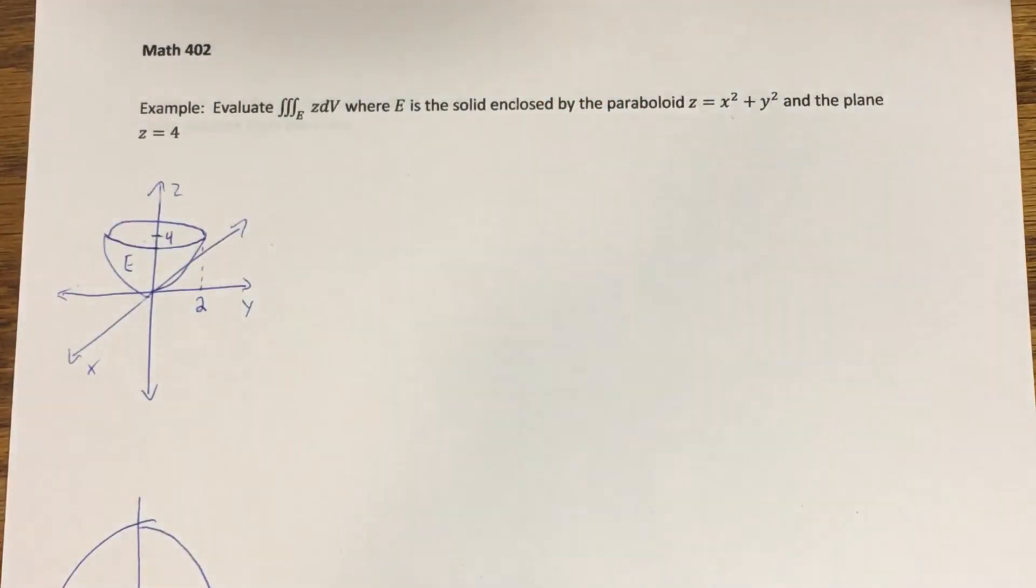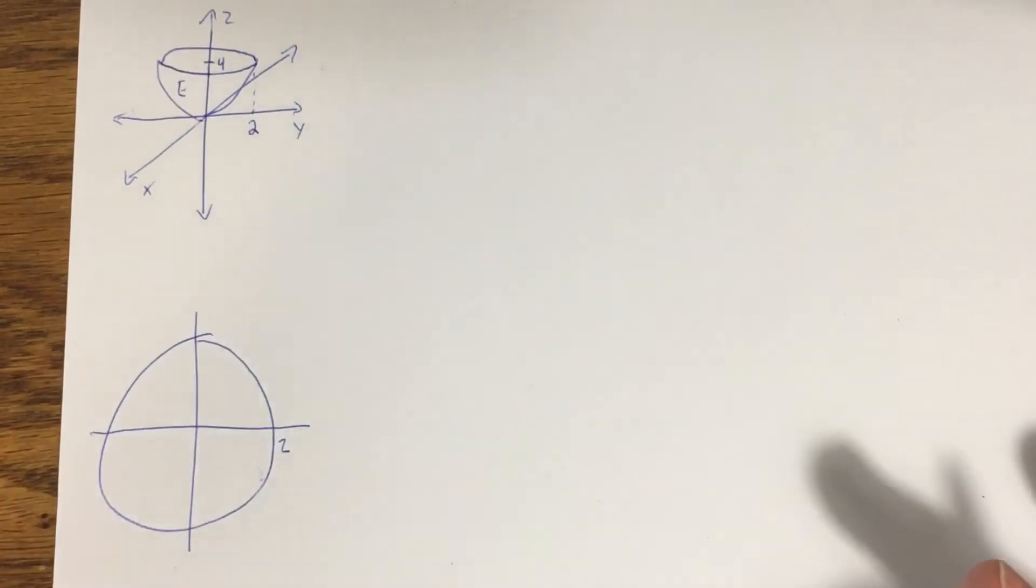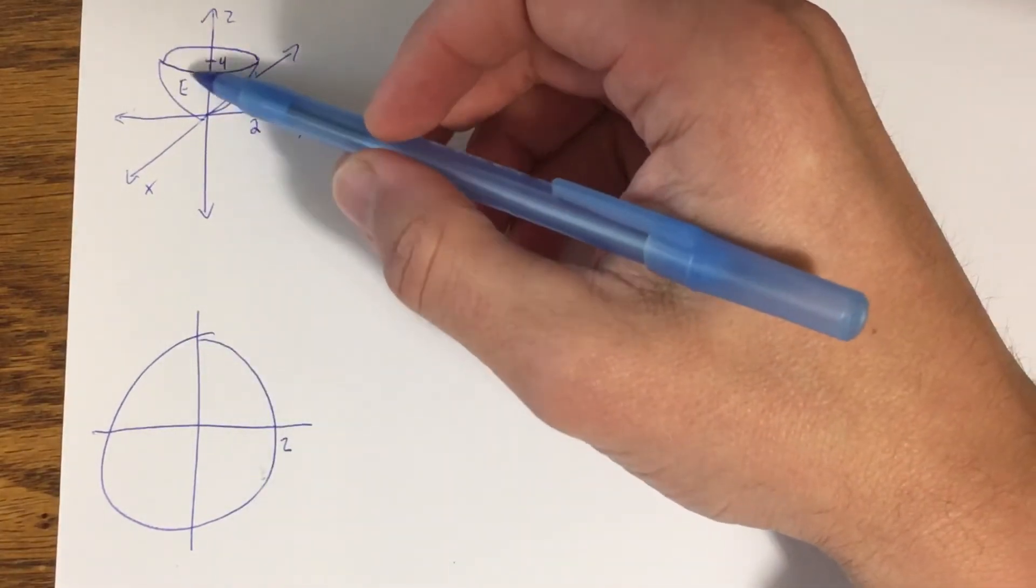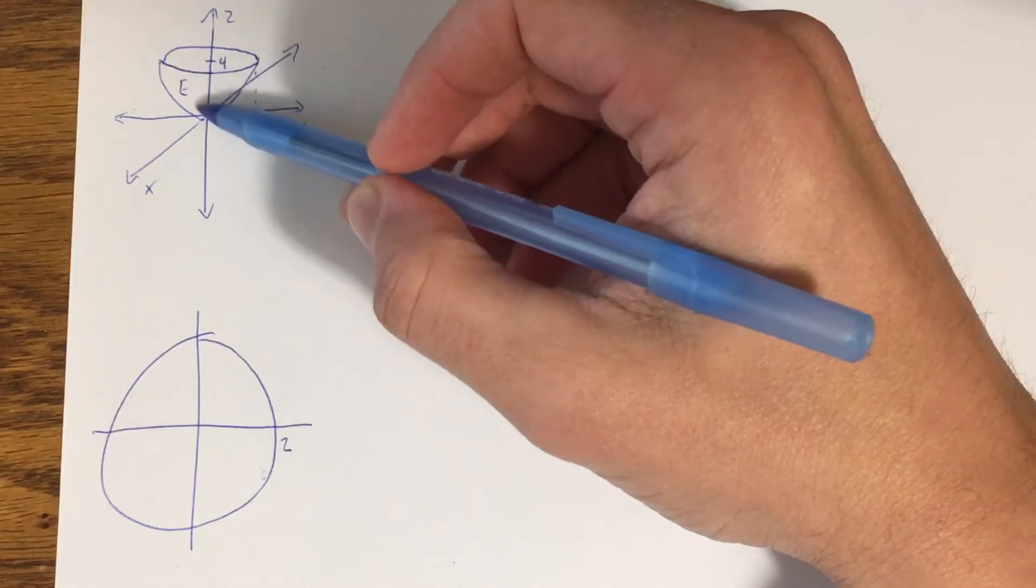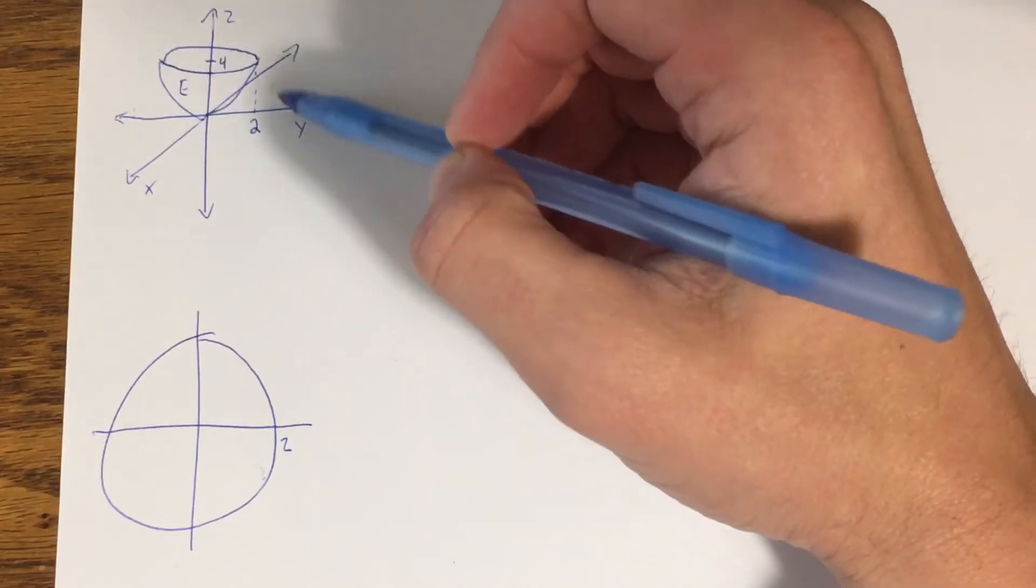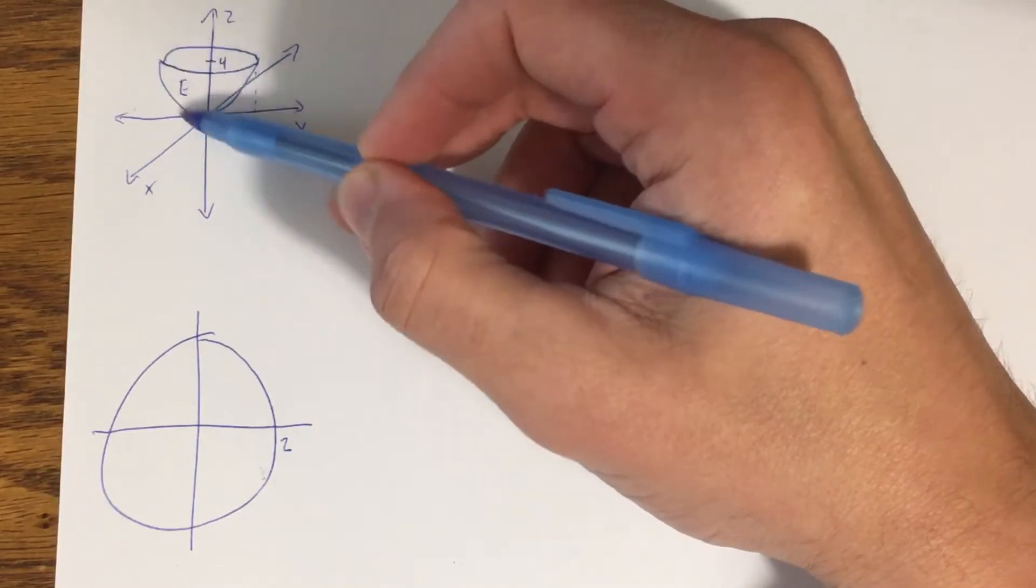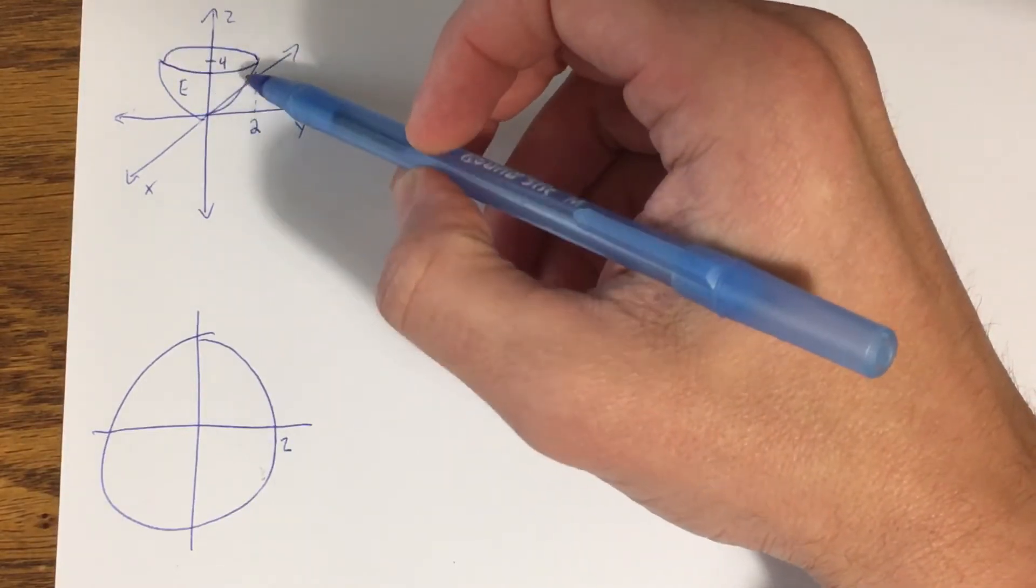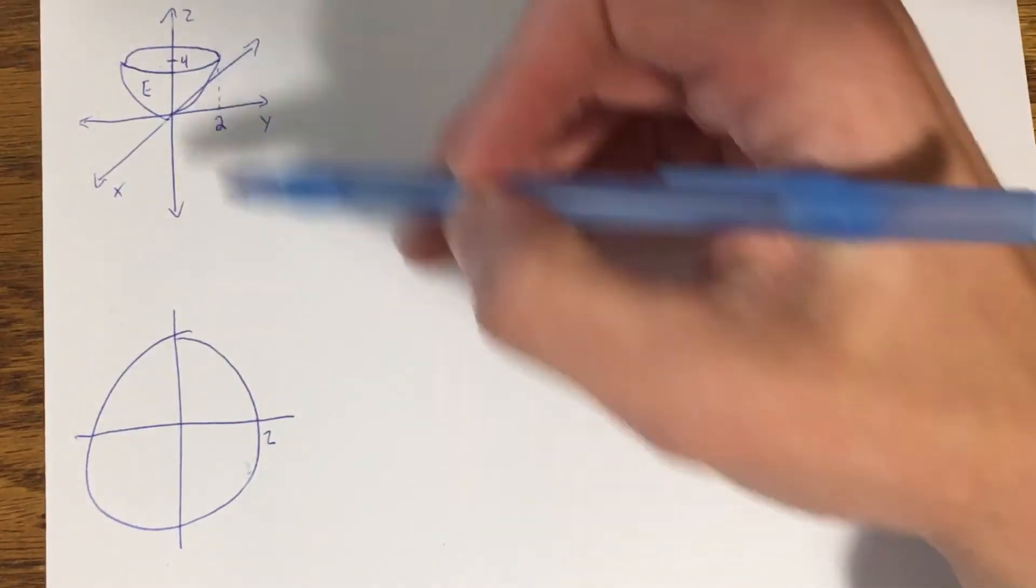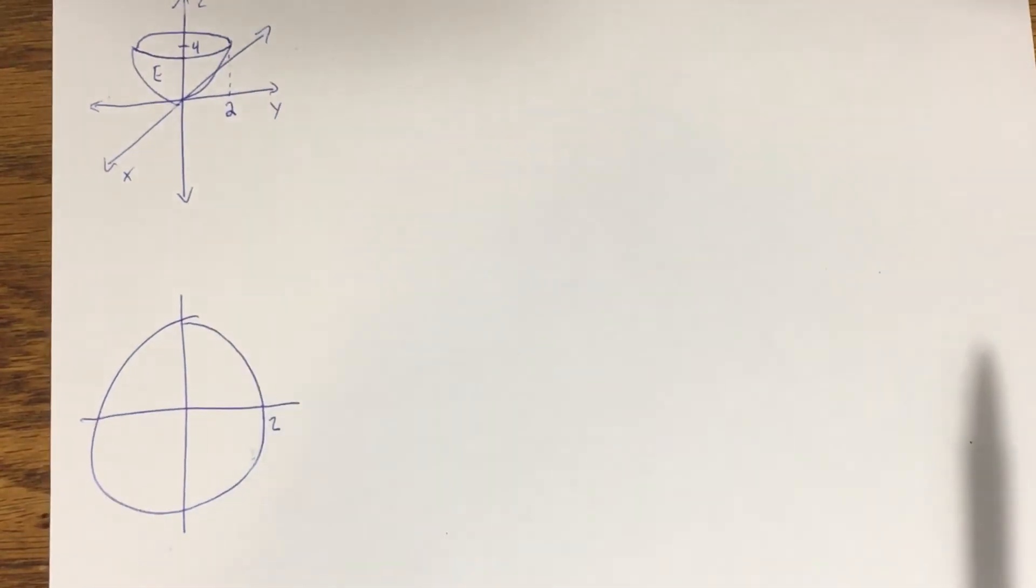We're going to project that down into the xy plane and you can see that the projection would look like a circle. In this case, the circle is going to have a radius of 2, which we can see by just looking at this projection. The parabola in the yz plane, that's the trace of this paraboloid, would have a point at 2, 4. So that 2 is what's getting projected down here to create the radius of this circle.